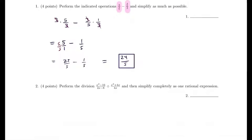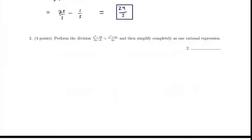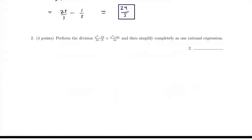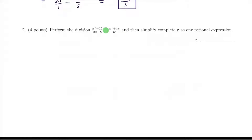Moving on to the next problem. We want to simplify this expression and reduce it as much as we can. When you see something like this you want to factor. I also notice there's a division in the middle, so we want to turn this into multiplication using keep-change-flip. We keep x squared minus 16 over 2x minus 8, times the reciprocal of the next fraction, which becomes 4x over x squared plus 4x.